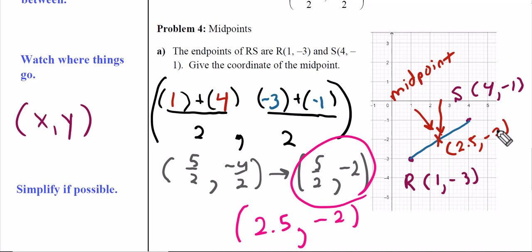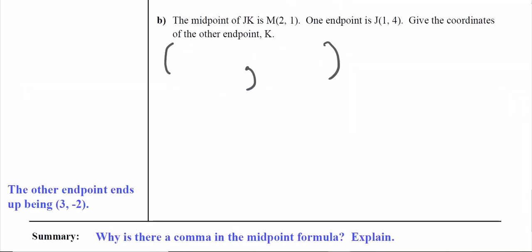For part b, this one's interesting. This time they gave us a midpoint. Point J is given as (1, 4), they gave us midpoint M at (2, 1), and we want to find the value of K - the other endpoint.